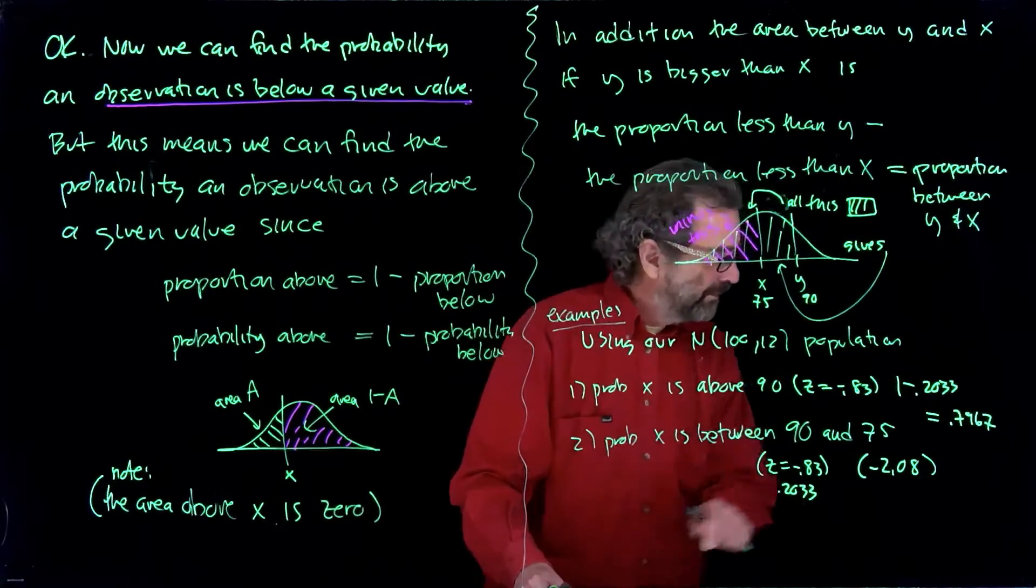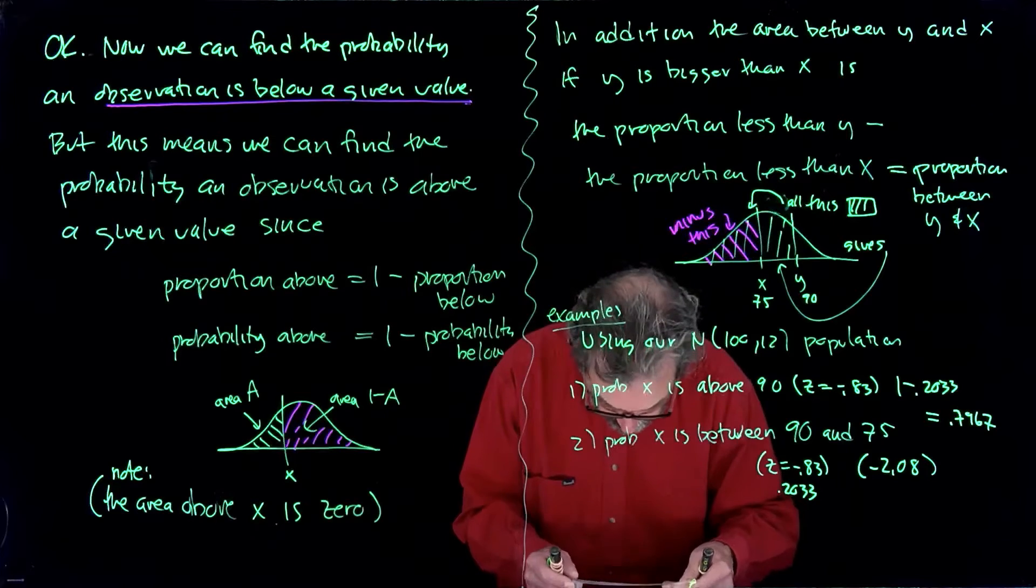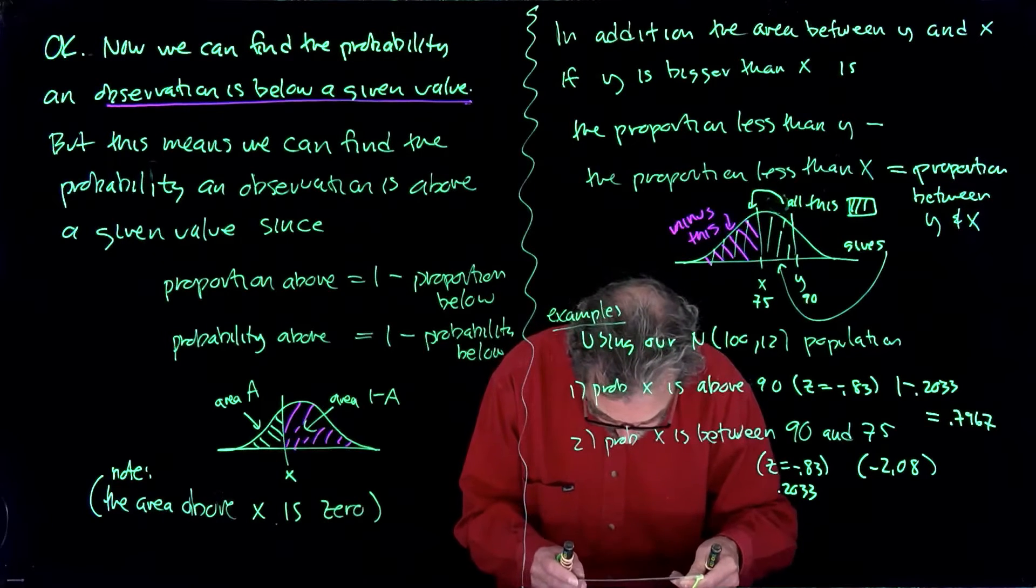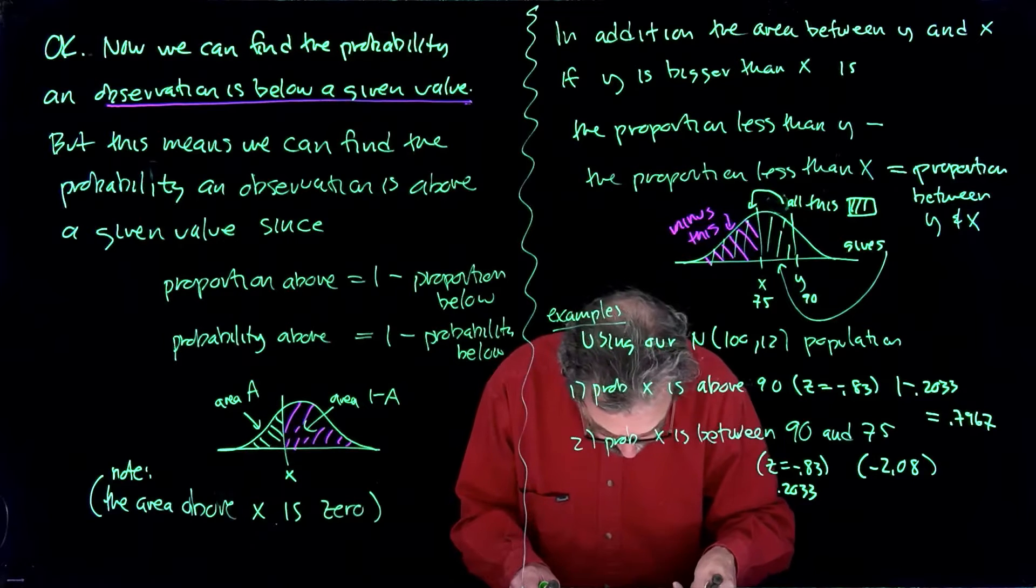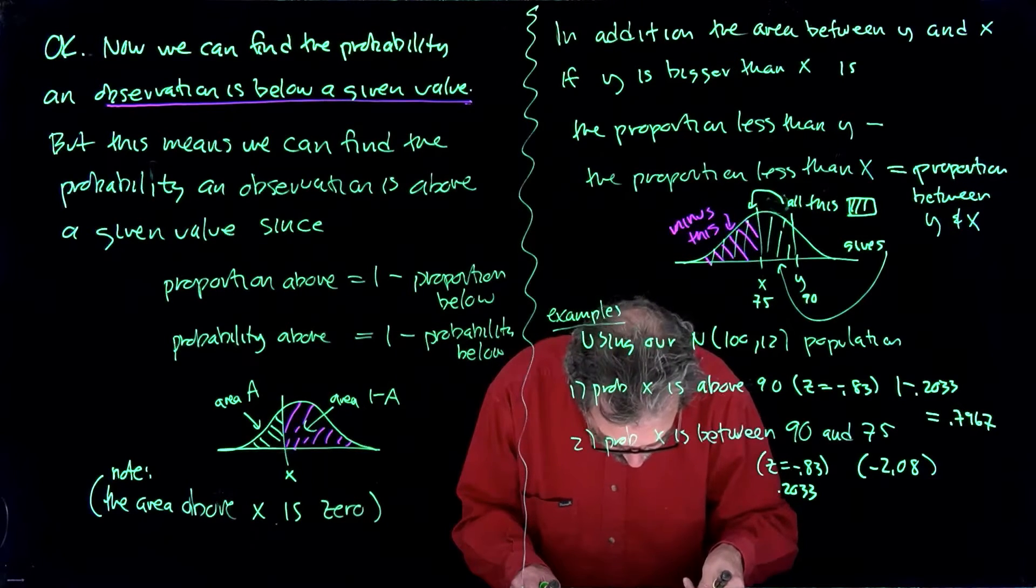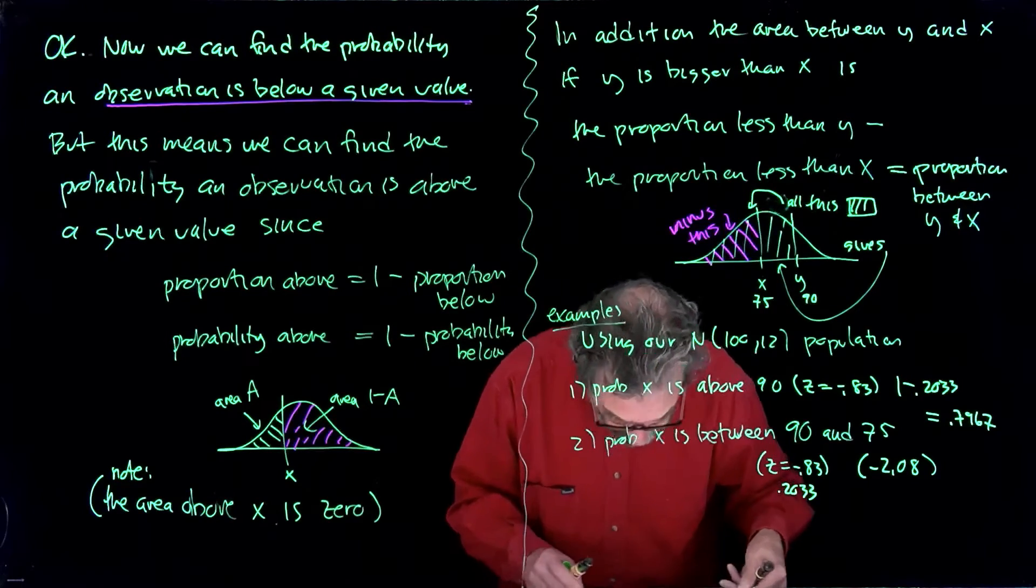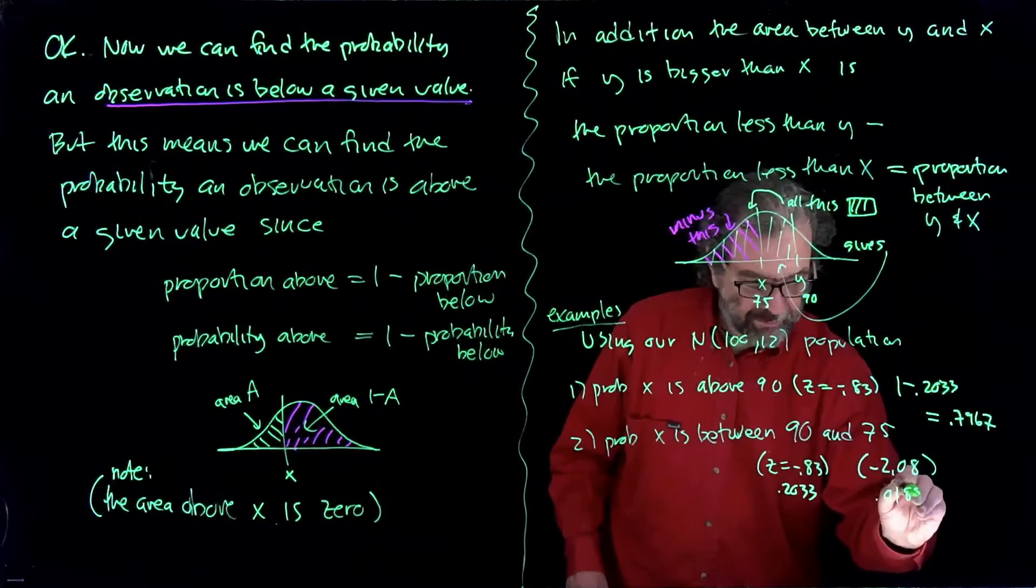Now it's dark in here. Minus 2.08, minus 2.08 is over there. .0188. It's so dark. I should turn the lights on, but I'm not doing it. .0188.